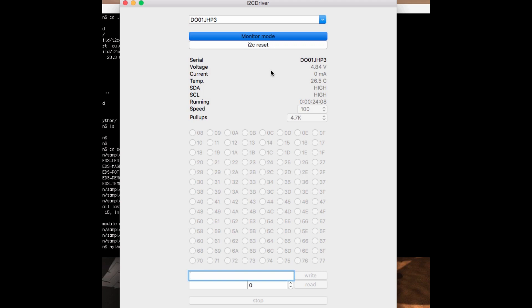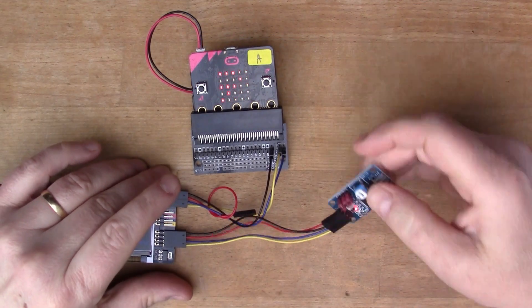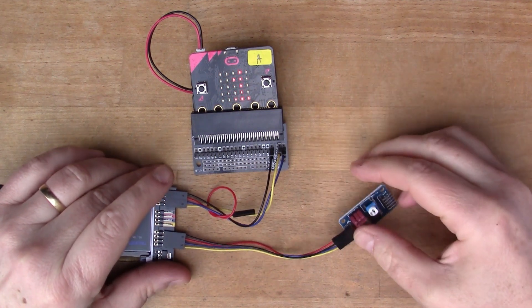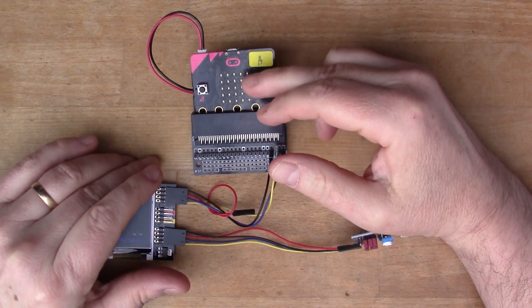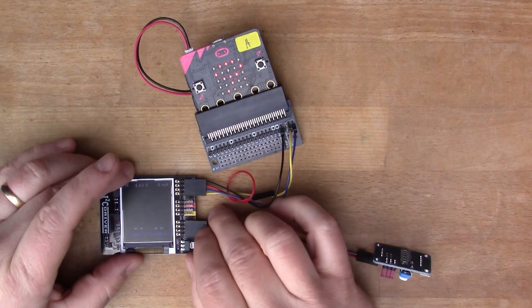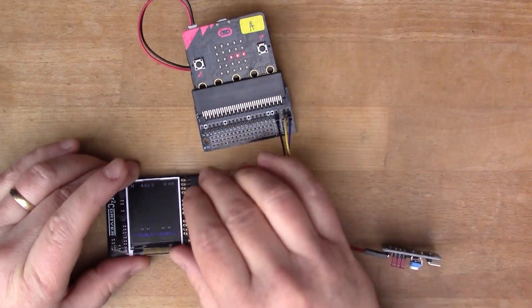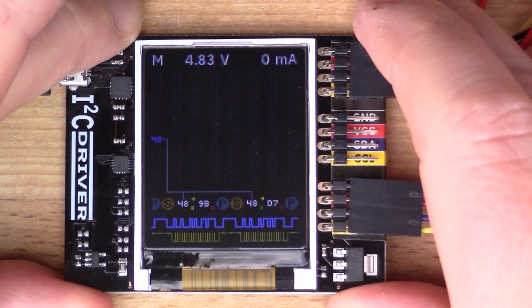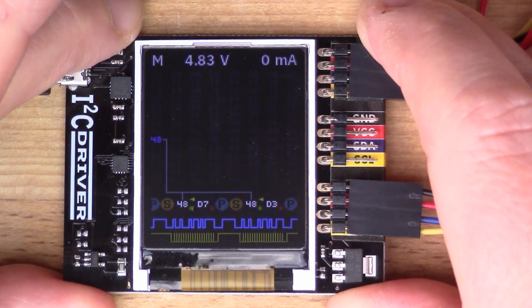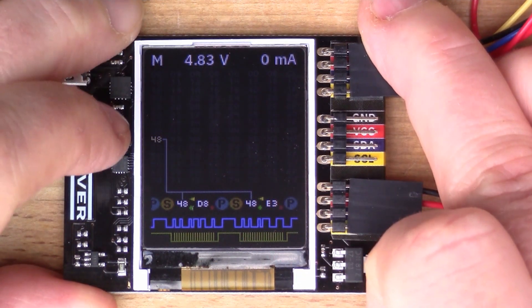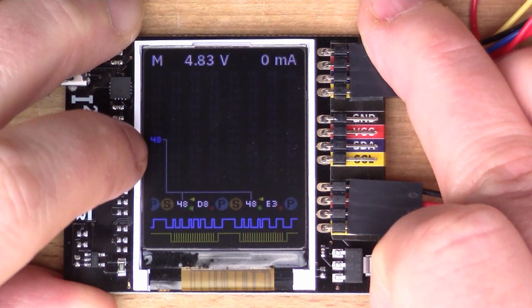We'll have a look at the PCF8591, the A2D converter. I've got an LDR on here and a small program inside the BBC micro:bit which is reading the LDR using the I2C bus. In the middle here I've got the I2C driver and you can see there's some activity. It's a little bright in here but you can see the SDA and SCL going up and down. We can see device 48 is active on the bus.